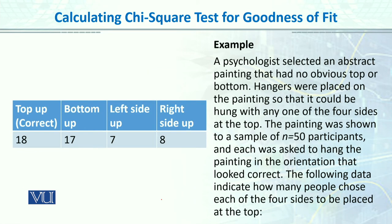Here is the example we will solve: A psychologist selected an abstract painting with no obvious top or bottom. Hangers were placed so it could be hung with any of the four sides at the top. The painting was shown to 50 participants, each asked to hang it in the orientation that looked correct. The data show how many chose each side: 18 chose the top side, 17 chose the left side, 7 chose the bottom, and 8 chose the right side.